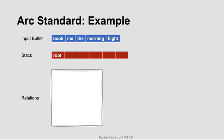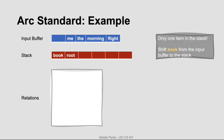Let's see how the ARC standard approach works with a concrete example. We start with the input buffer for the sentence 'book the morning flight.' In our initial state, the only thing on the stack is the root, and no dependency relations have been asserted yet. We need to decide what operator to apply. Left ARC and right ARC both require two elements on the stack, which isn't the case right now, so we have to perform a shift operation. We shift the word 'book' from the input buffer to the stack.